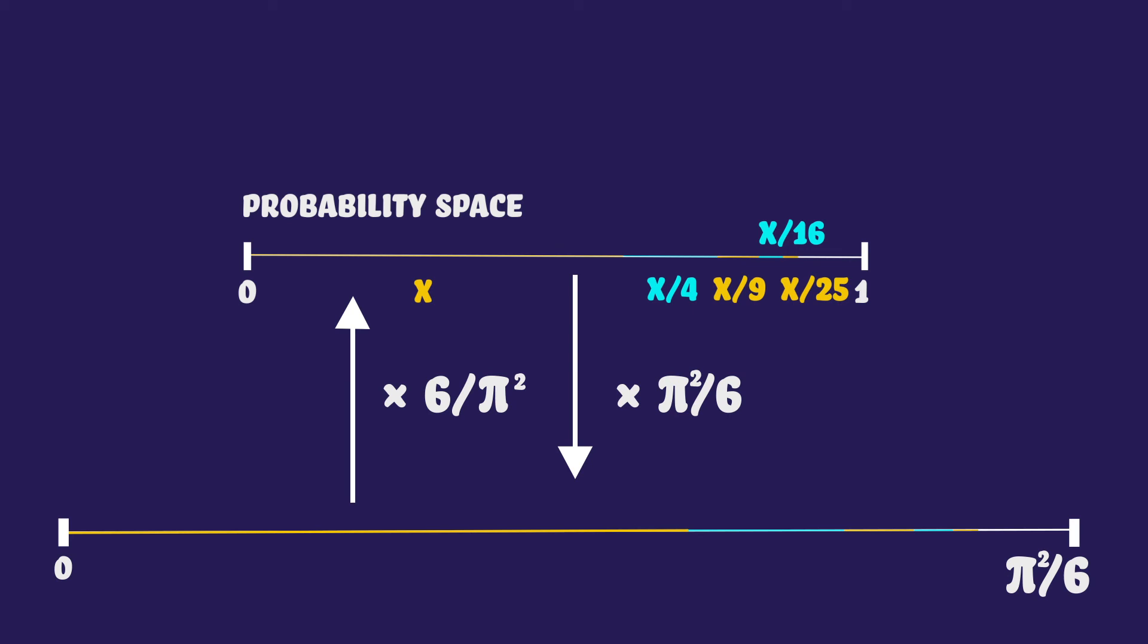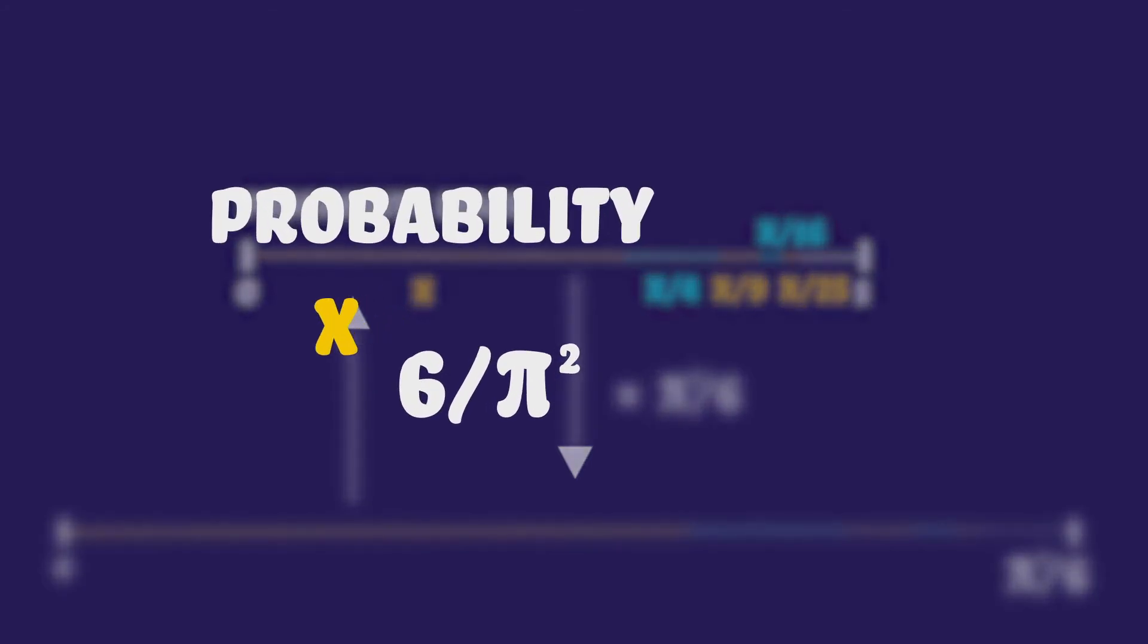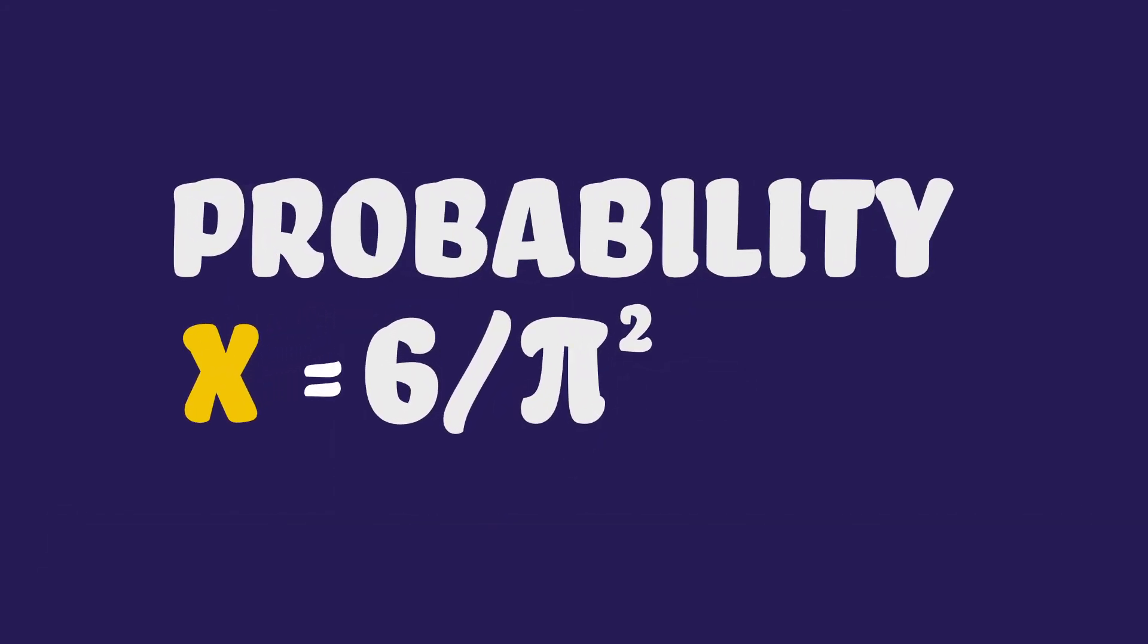And yeah, this means that x is 6 divided by pi squared. And remember, x is the probability that the two numbers were coprime. So yeah, that's why.